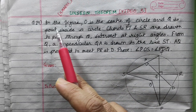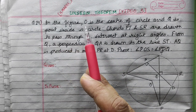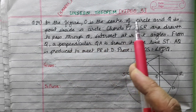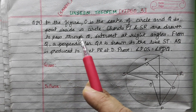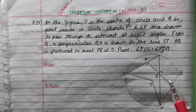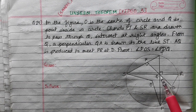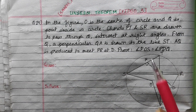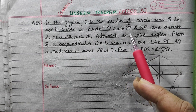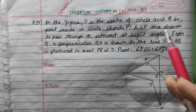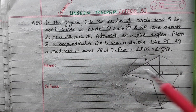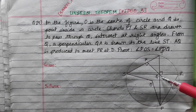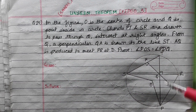In a figure, O is the center of the circle. Q is a point inside the circle. Chords PT and SR are drawn to pass through Q.